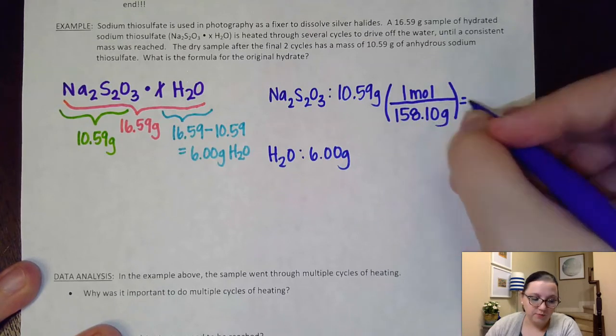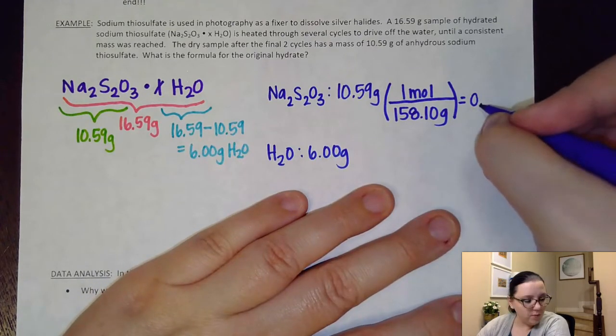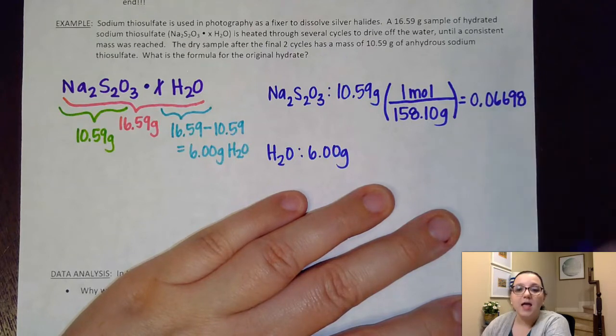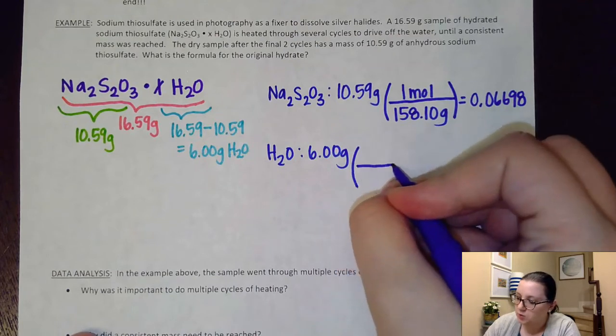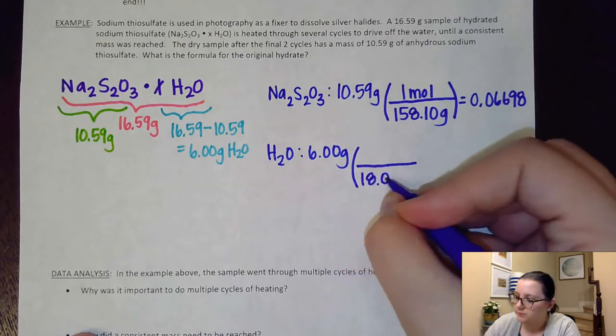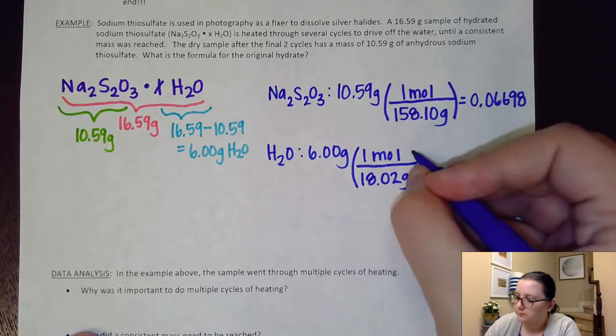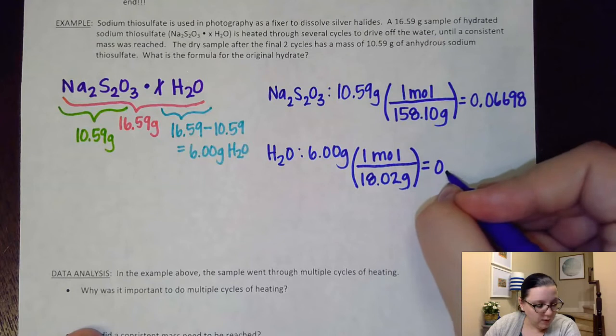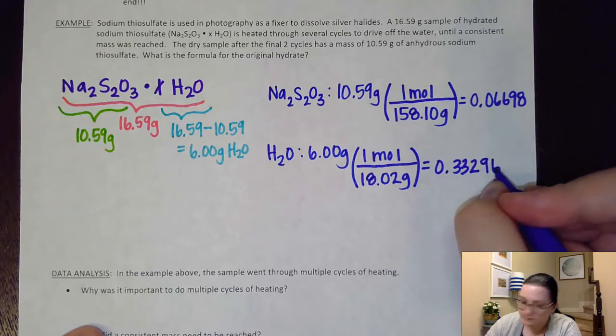And again, just like before, I would want to show at least four sig figs here. So that gets an answer of 0.06698. And on the water, I know water has a molar mass of 18.02. That's one we're pretty familiar with, for every one mole of water. And again, I would want to show at least four sig figs here, if not more, because I'm not done with my math yet. So this gets an answer of 0.33296.